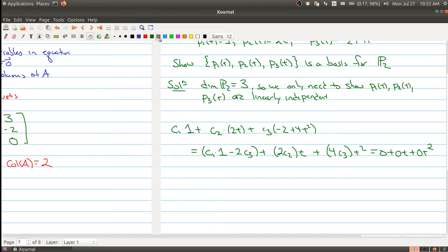And now if you stare at this for a second, this can only happen if the following happens. First of all, the coefficient of t squared has to be zero. So here, C3 has to be zero.